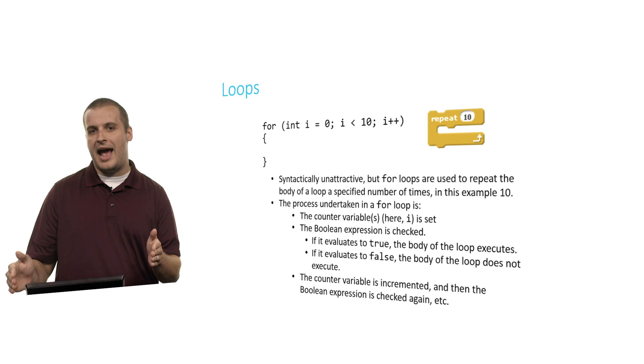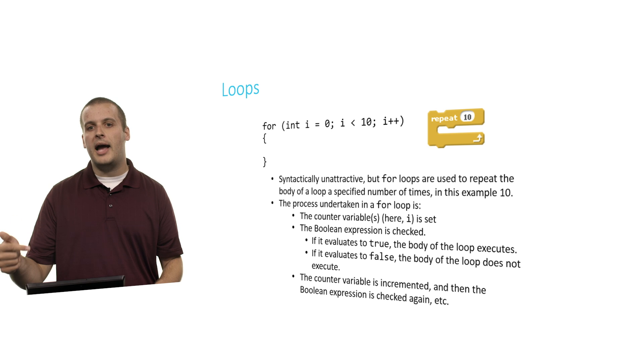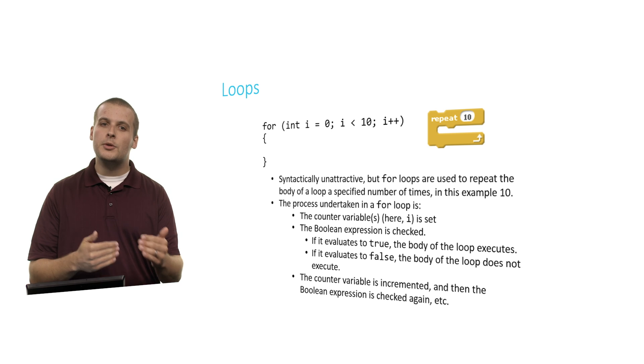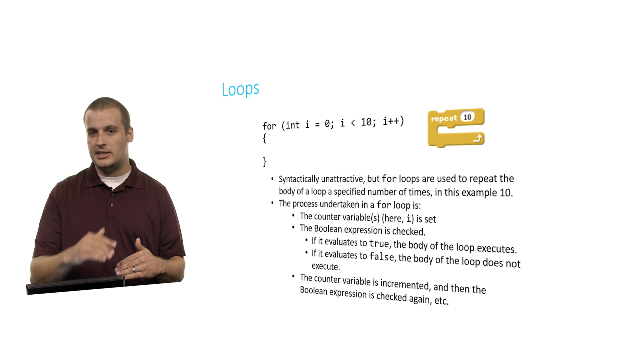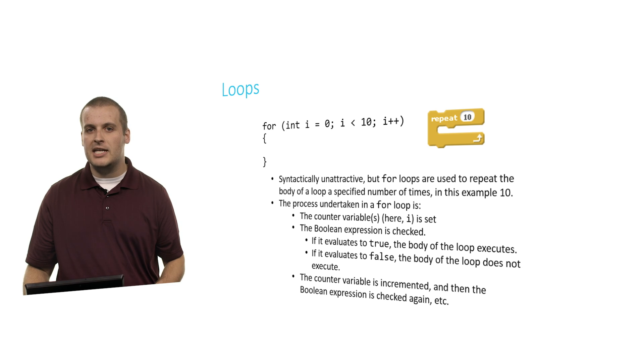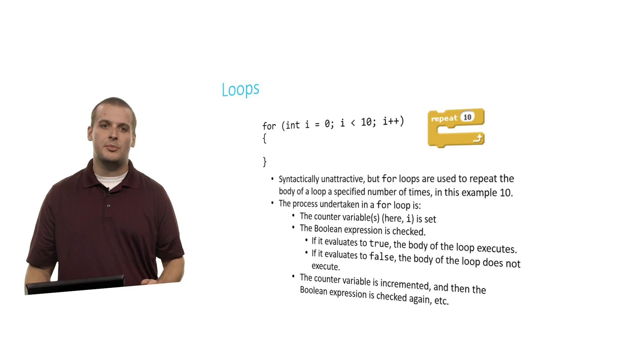So we start out by saying int i equals 0. Then we check whether or not the Boolean expression is true. 0 is less than 10, so it's true. So we're going to proceed into the body of the loop. Things will happen inside the loop, and when we encounter that closing curly brace, the next thing we do is we say i plus plus. So i was 0. Now i is 1. Then we again check the value of the Boolean expression in the middle. 1 is less than 10. So we'll go through this process again and again. We'll get to the closing curly brace again. We'll increment i from 1 to 2, then from 2 to 3, and so on and so on and so on, until eventually i's value becomes 10. Is 10 less than 10? No. Now, counting from 0, we've gone through 10 iterations of the loop. We've repeated 10 times, just as we did in the Scratch block. And so that's basically the process for a for loop.